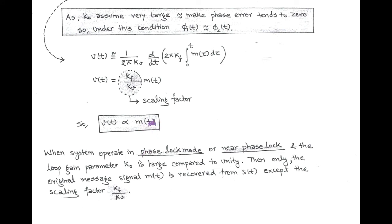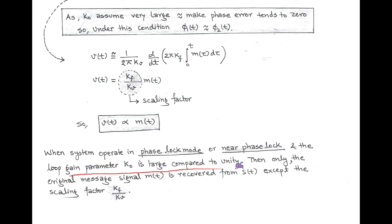In order to recover the original message signal — except for the scaling factor kF/kV — PLL must operate in phase lock or near phase lock mode with a very large loop gain parameter K0 compared to 1 radian.